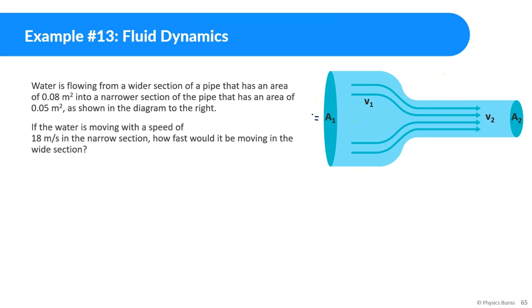So let's just write some things now. A1, the wider section of the pipe has an area of 0.08. A2 is equal to 0.05. And then we know if the water is moving with the speed in the narrow section, so we know v2 is equal to 18 meters per second. And we want to know what the speed is in the wider section.